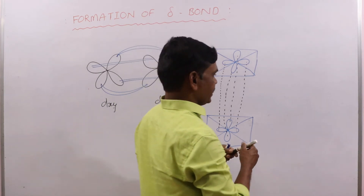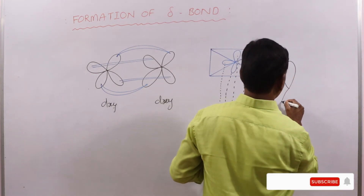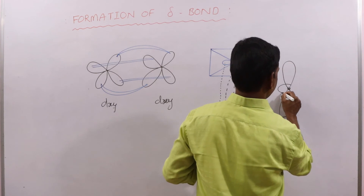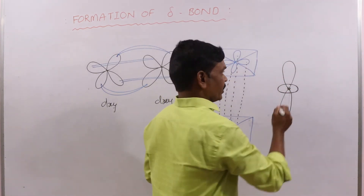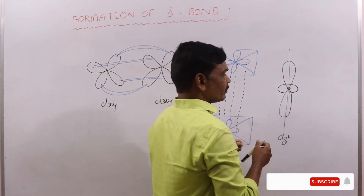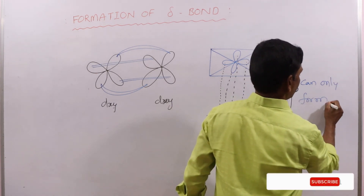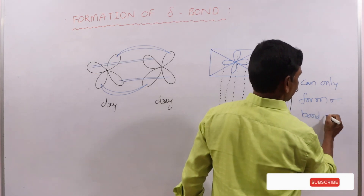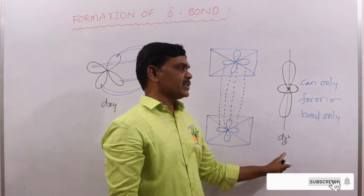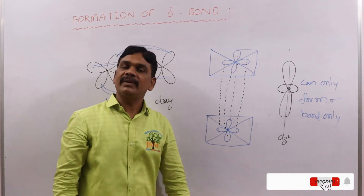One more important thing: except dz². I am writing the dz² orbital here. This is the dz² orbital — this is the nucleus and this is the electron cloud density. The dz² orbital can only form sigma bond, because of axial overlapping. So this is the formation of delta bond summary.